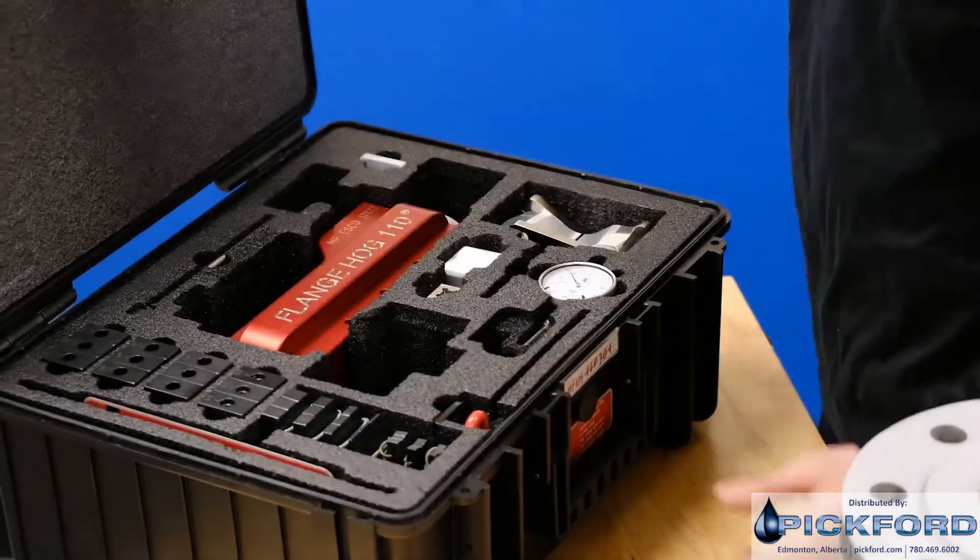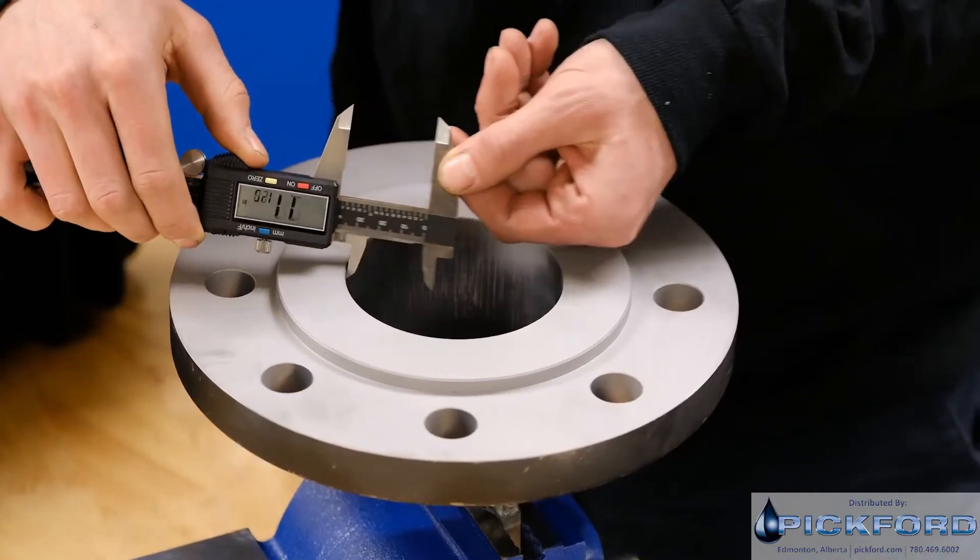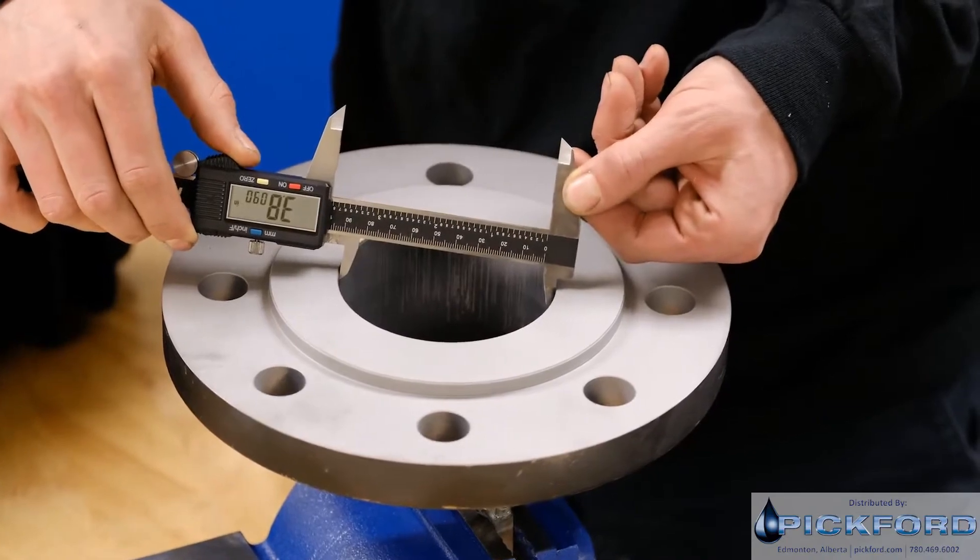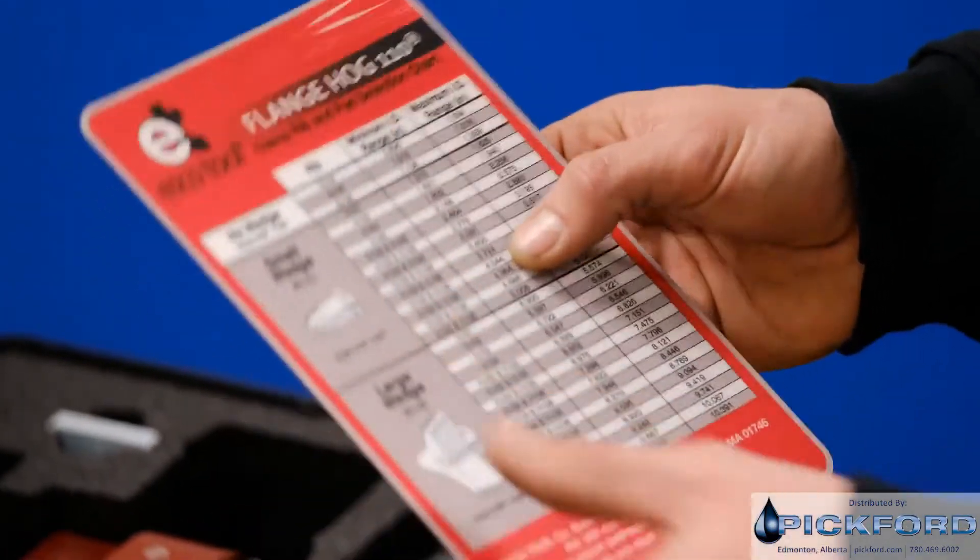The FlangeHog 110 is a manually operated hand tool ideal for quickly reconditioning rusty, scarred, and worn flange gasket seats to like new condition.